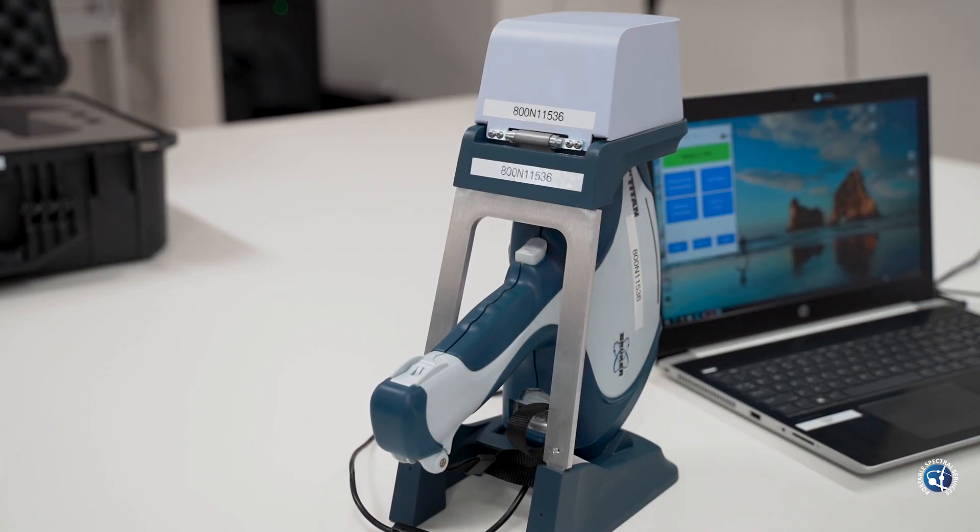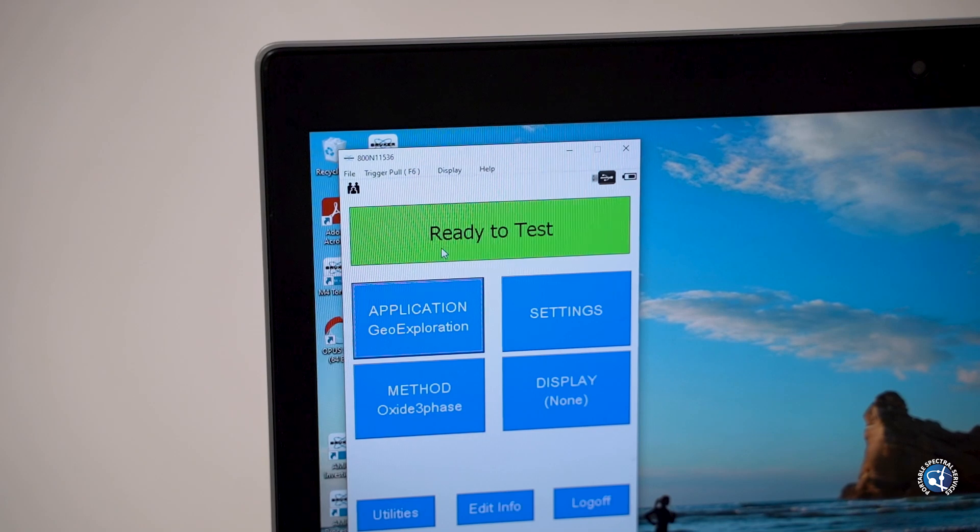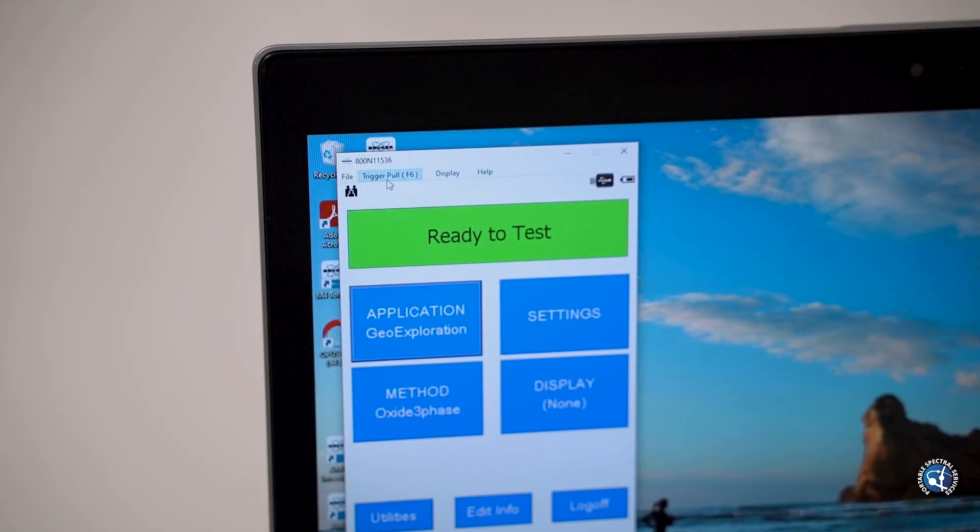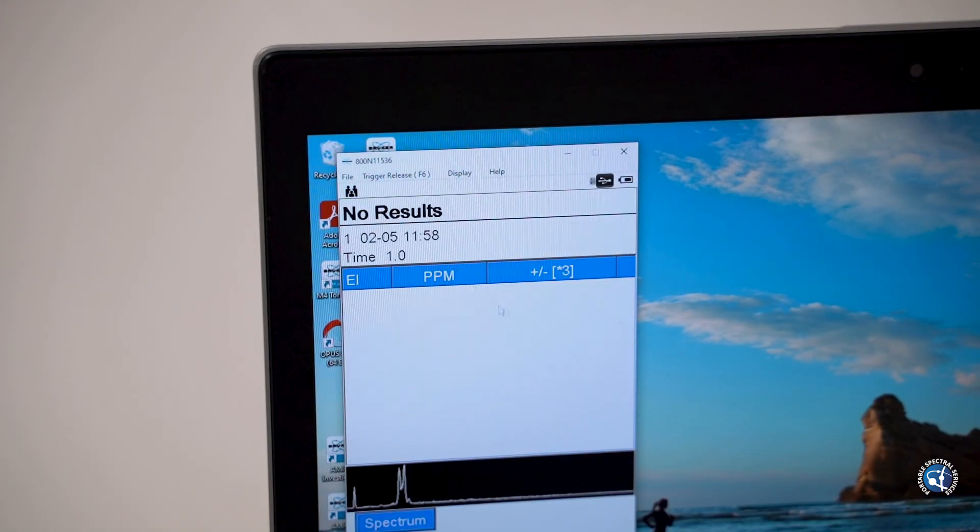If you're using Bruker remote control software, press trigger pull. To stop analysis early, pull and release the trigger again.